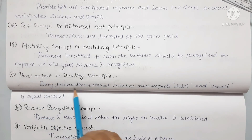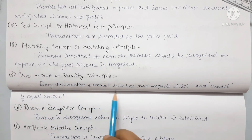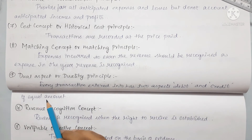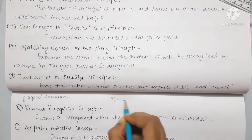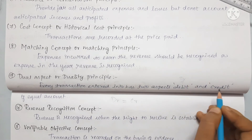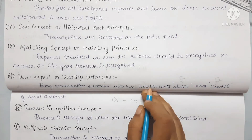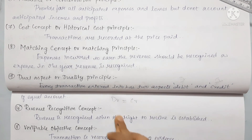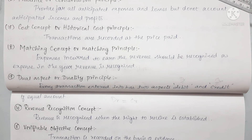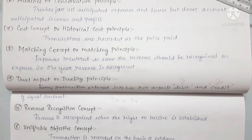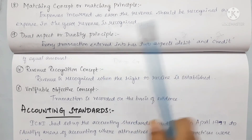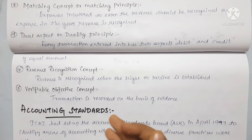Next is the dual aspect or duality principle. Every transaction entered into has two aspects — debit and credit of equal amount. The formula is: DR equals CR. So debit and credit are always equal. When we record a transaction, we record both sides. This is the foundation of the double entry system and we will learn more in further chapters.